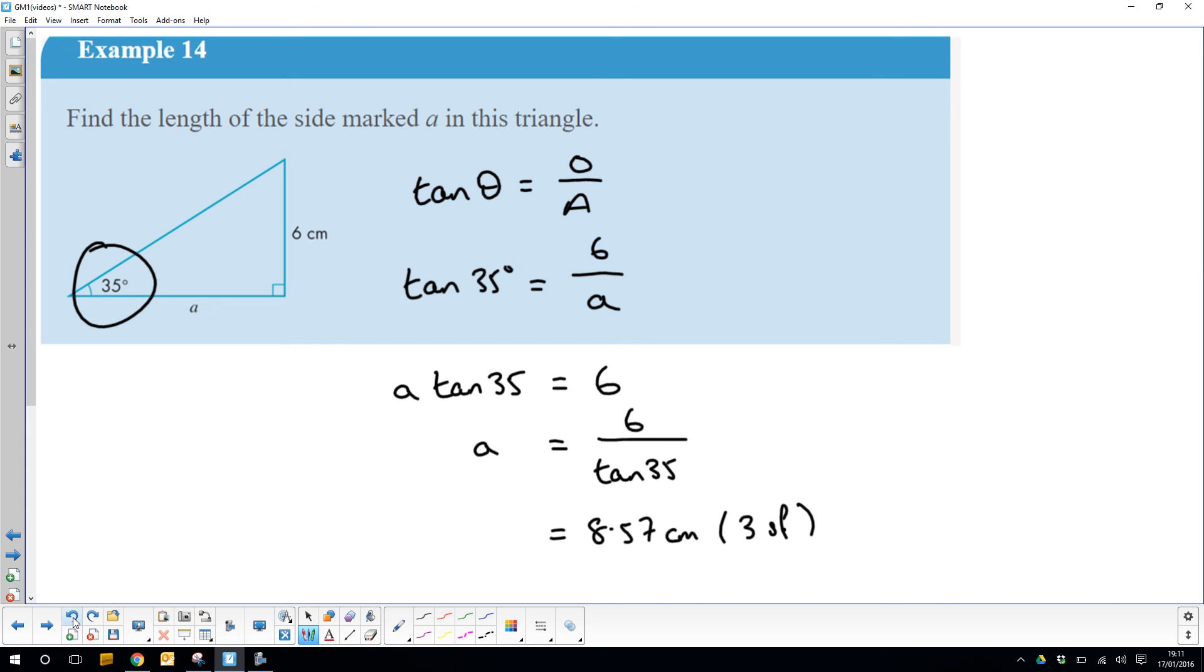So a being 8.57 looks pretty good to me. So that's everything prior to this exercise. Any questions, issues, let me know. Otherwise, crack on and get used to using the tan function.